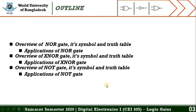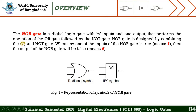Let's start with the overview of the NOR gate. The NOR gate is a digital logic gate with N inputs and one output that performs the operation of the OR gate followed by the NOT gate. The NOR gate is designed by combining the OR and NOT gates. When any one of the inputs of the NOR gate is true — which means one, or equivalent to high — then the output of the NOR gate will be false, which means zero. Figure 1 represents the symbols of the NOR gate, and there are two symbols: one is traditional and another is the IEC symbol.